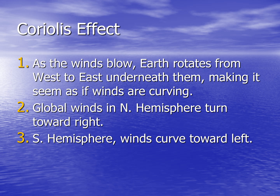The Coriolis effect is the movement of air caused by the rotation of Earth. As the wind blows, Earth rotates from west to east, making it seem as if winds are curving. Global winds in the northern hemisphere turn right. Southern hemisphere winds curve toward the left.